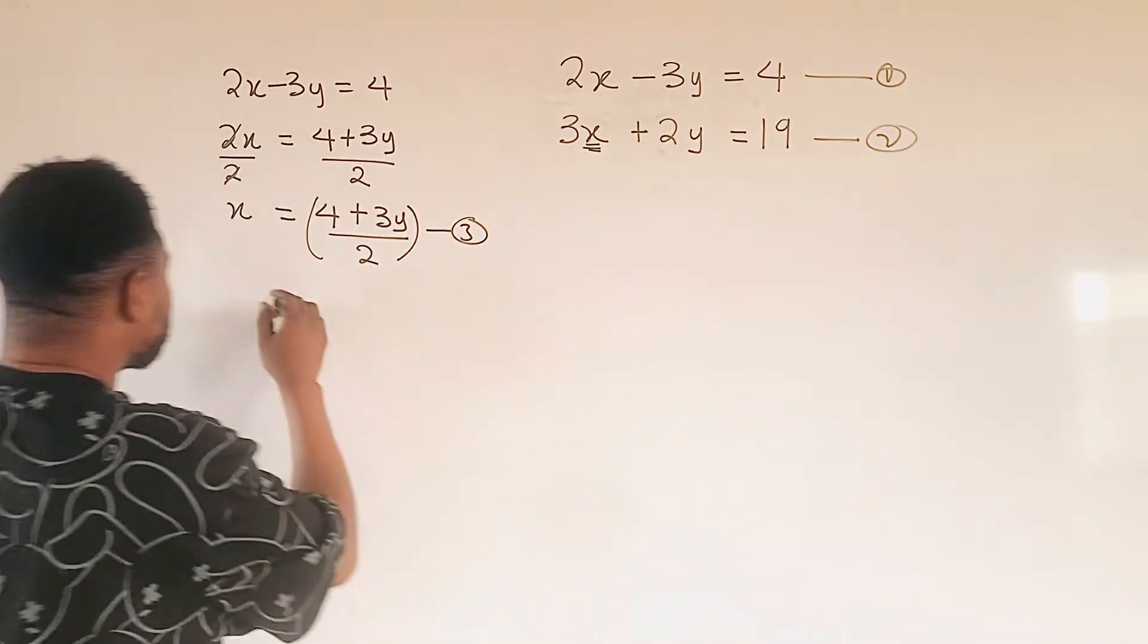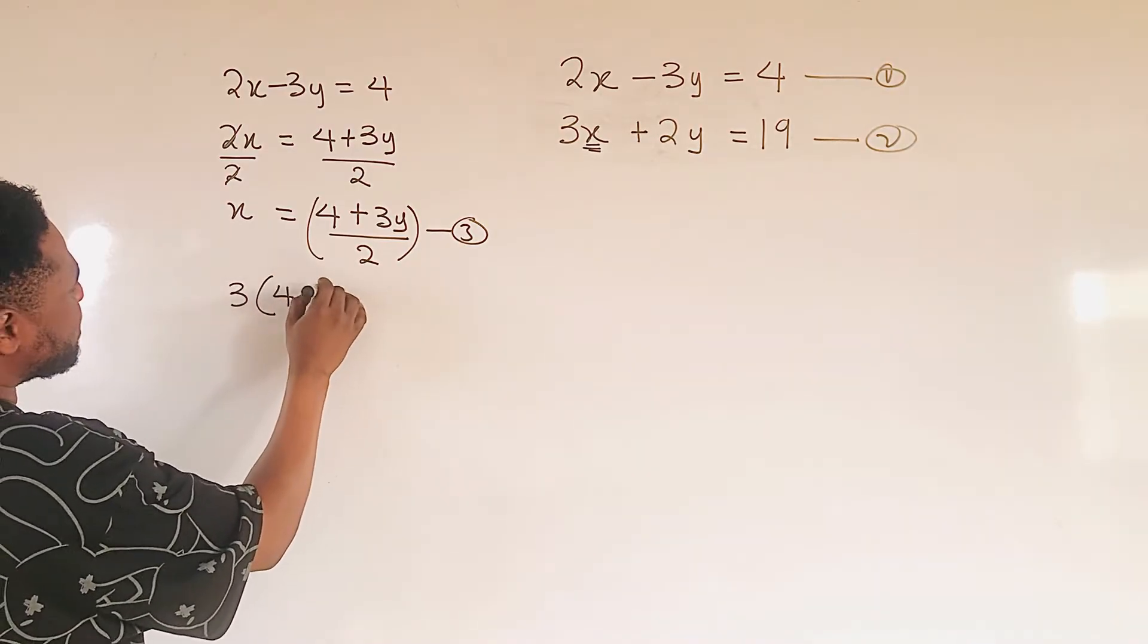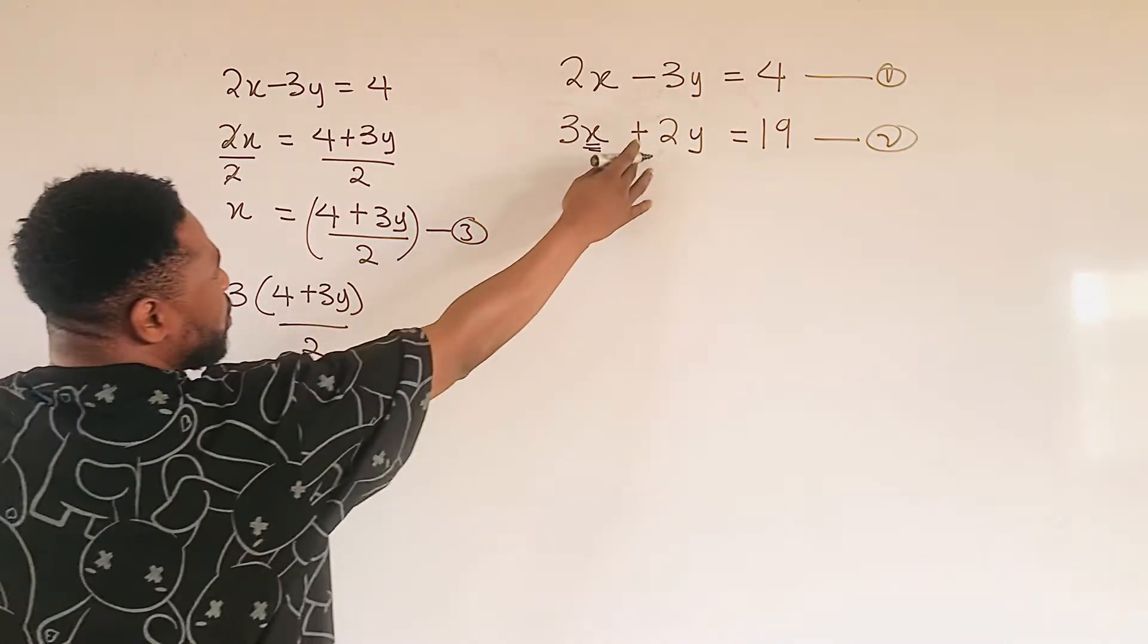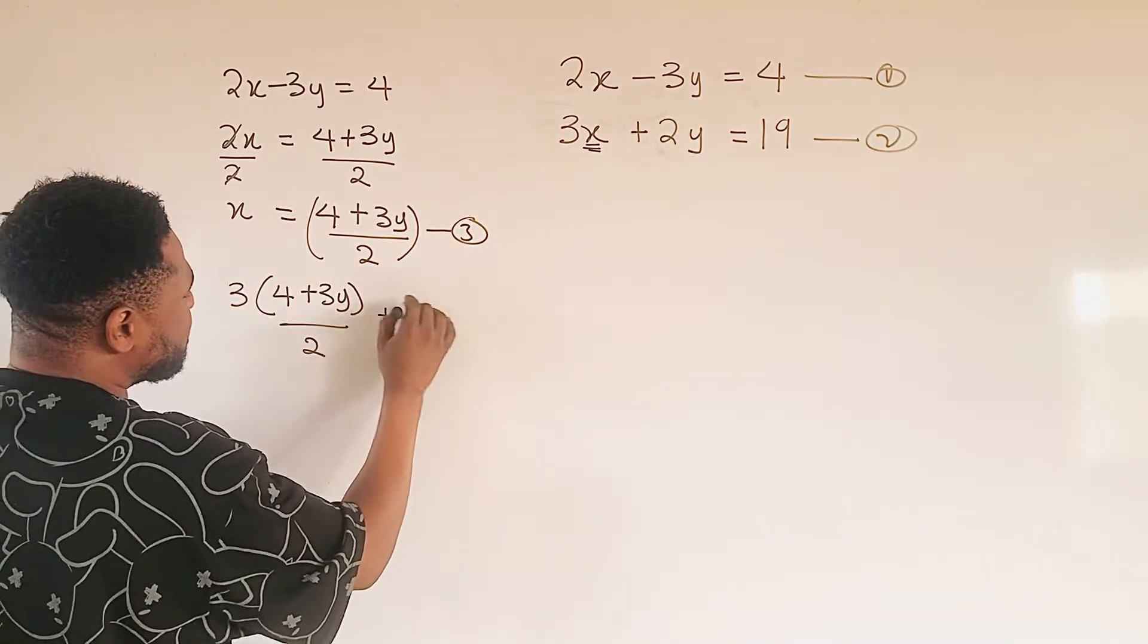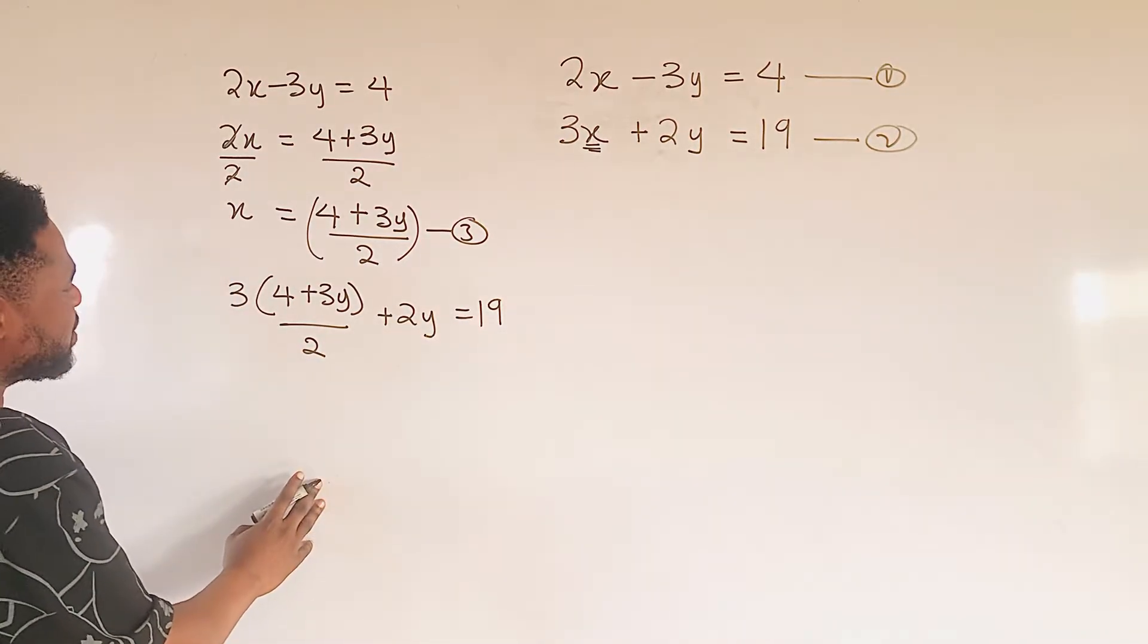Let's see how we can do it. So we have our 3 here, we multiply 4 plus 3y, all divided by 2, plus 2y equal to 19, as we can see here.